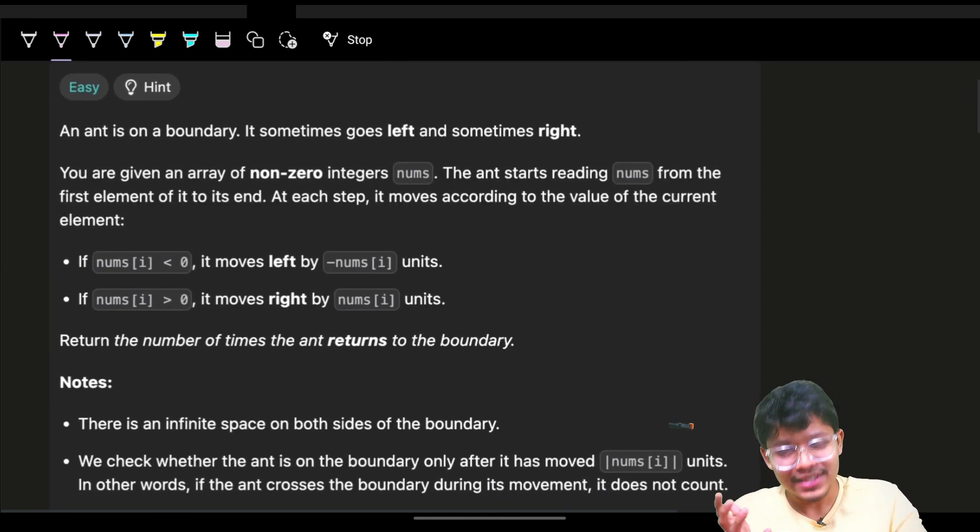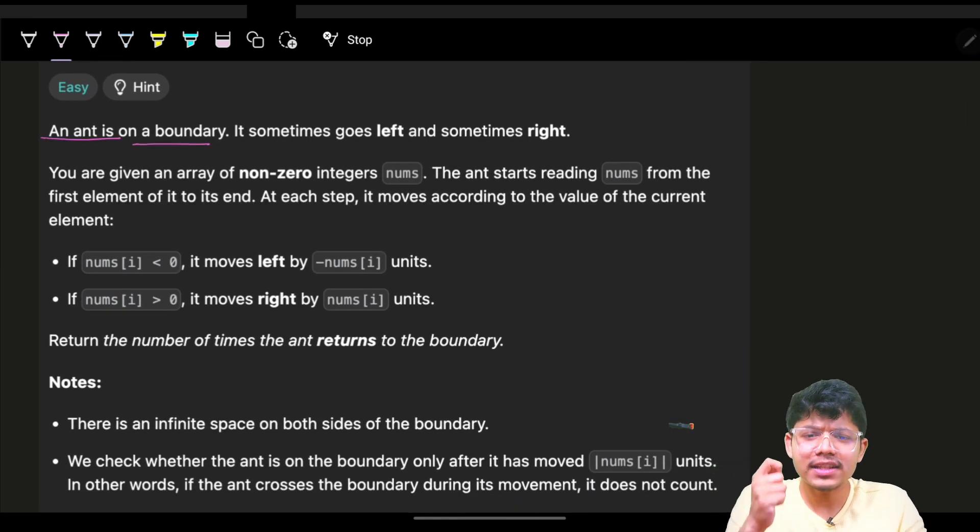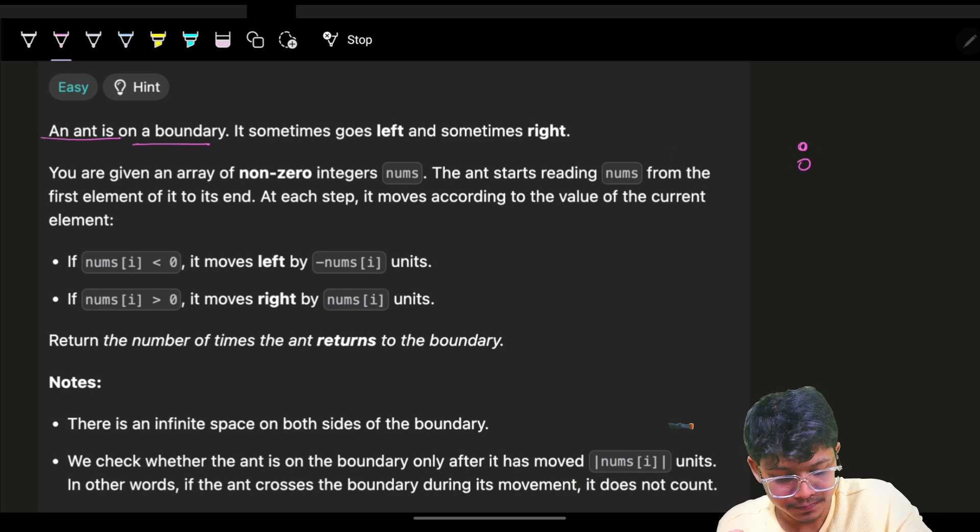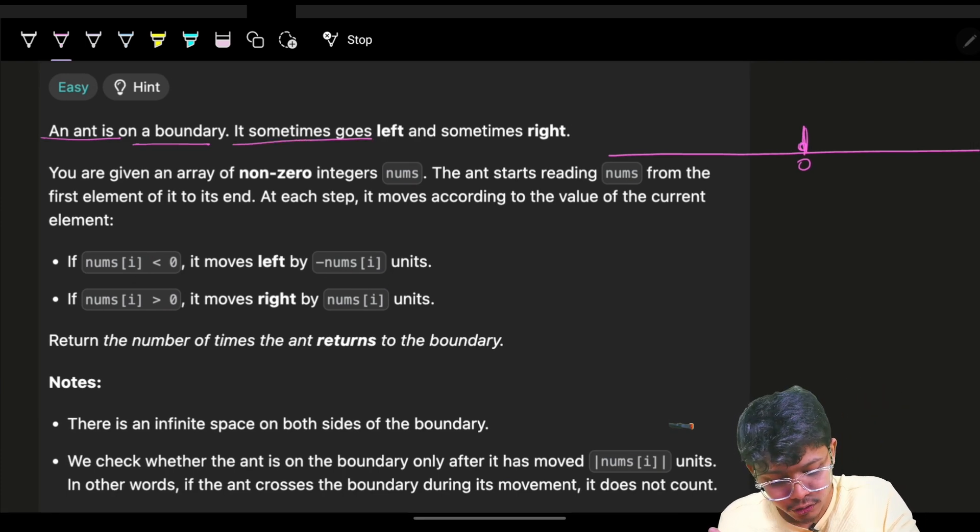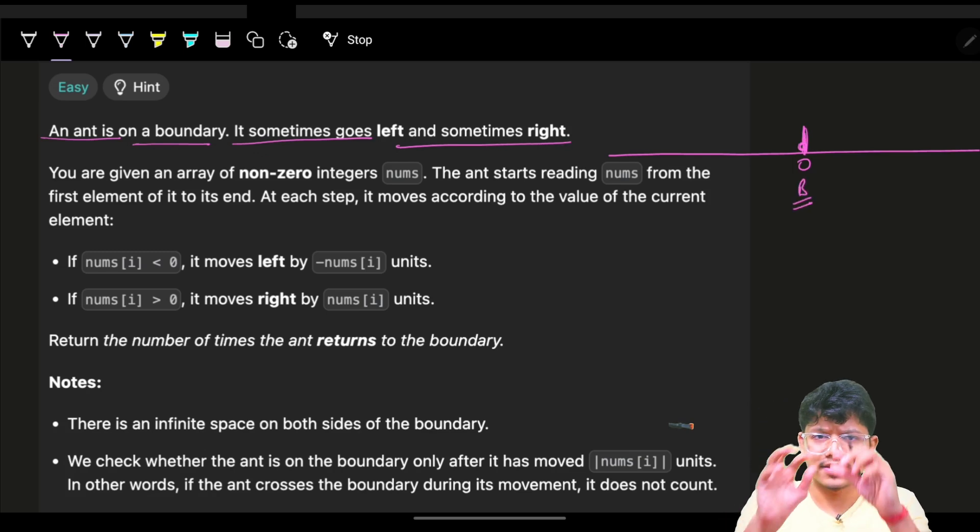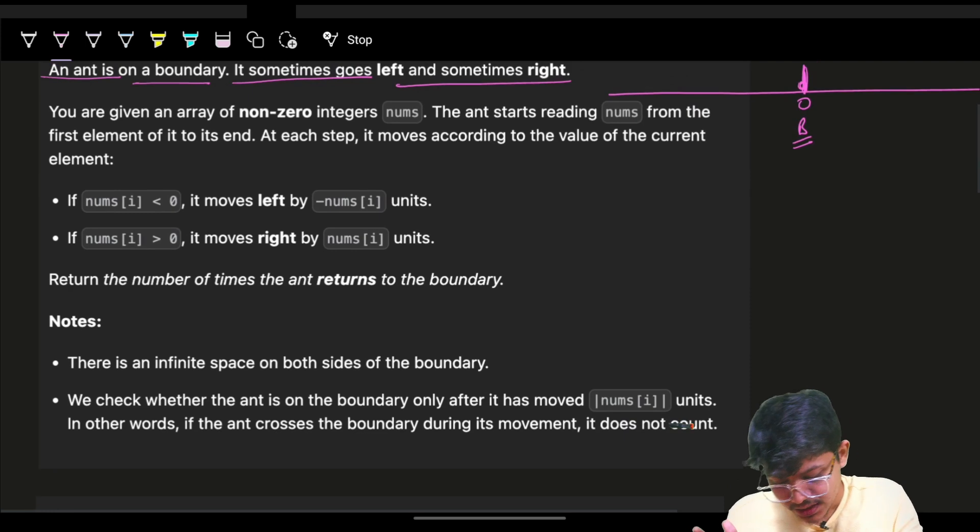The problem says that an ant is on the boundary. Let's name that boundary as zero. The ant is just traveling left and right and is initially at the boundary. It sometimes goes left and sometimes right. Let's imagine this as a simple coordinate system and the ant is initially at the zeroth coordinate, which means at the origin. It can go left or right.